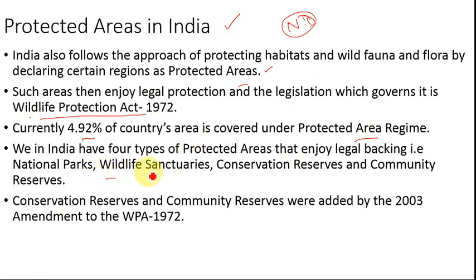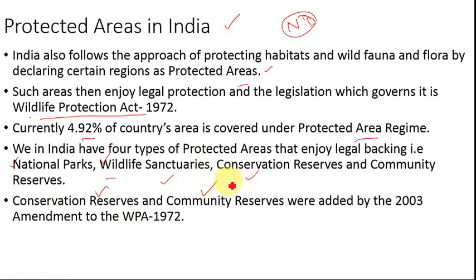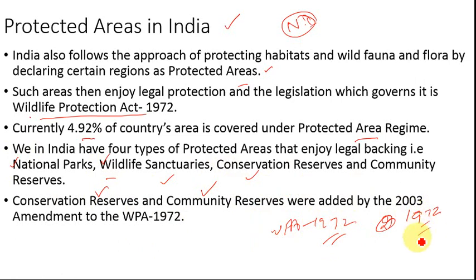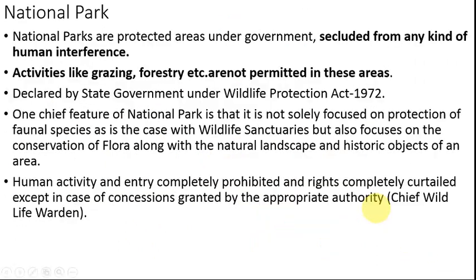India has four types of protected areas that enjoy the legal backing of the Wildlife Protection Act: national parks, wildlife sanctuaries, conservation reserves, and community reserves. Earlier, only two types existed under the Wildlife Protection Act — national parks and wildlife sanctuaries. By the amendment of 2003, two further categories were included: conservation reserves and community reserves.